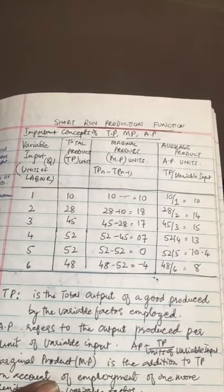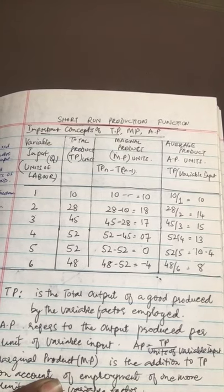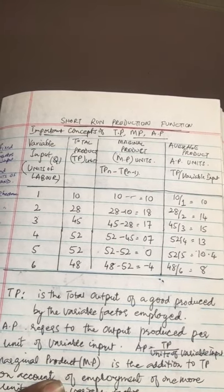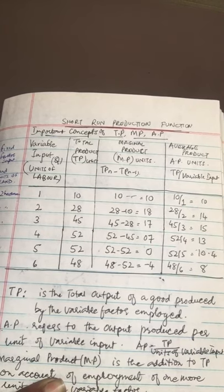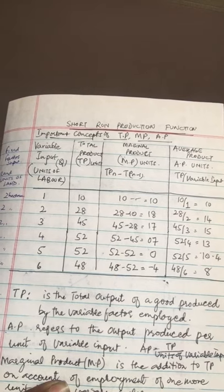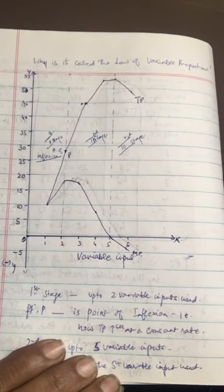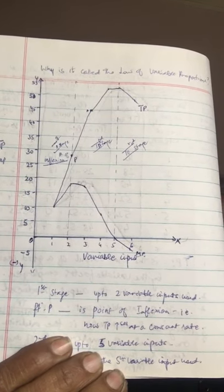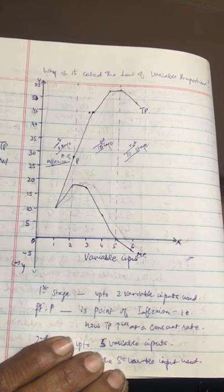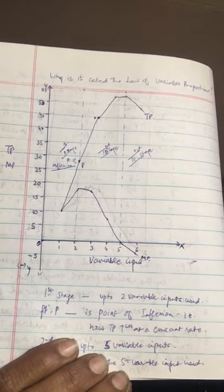In the last class we talked at length about these three important products — total product, average product, and marginal product — that we get by putting inputs, varying one (that is labor) and keeping the other fixed. Based on that, I plotted the TP and MP into a graph, so we can see the shape of TP and how marginal product follows.